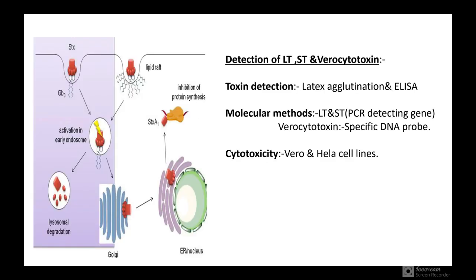Detection of heat labile toxin, heat stable toxin, and verocytotoxin is by toxin detection, latex agglutination, and ELISA. Molecular methods for detecting heat labile toxin and heat stable toxin include polymerase chain reaction detecting the gene. Verocytotoxin is detected by a specific DNA probe. Cytotoxicity can be detected using Vero and HeLa cell lines.